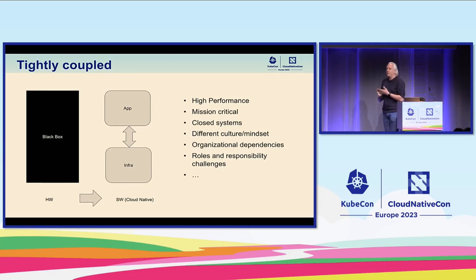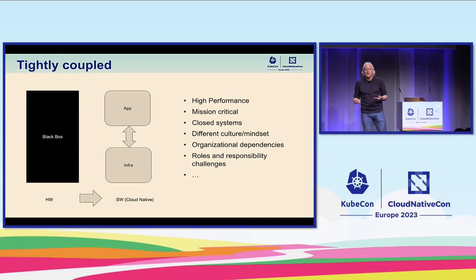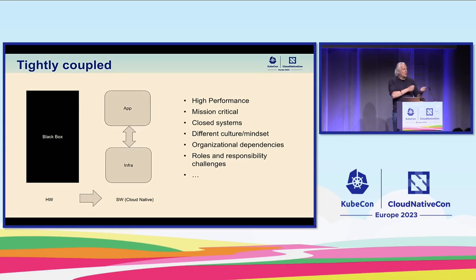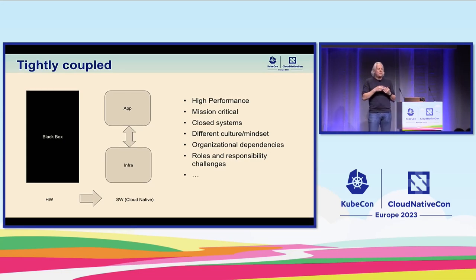In particular, when we talk about network functions, keep in mind that we used to develop these as hardware black-box systems as a vendor. Now with everything happening in cloud-native, we are decoupling that and making it truly cloud-native, running on Kubernetes. But the culture we had meant we had full control over everything, and we are now going into a world where the amount of control we have is lesser and lesser.